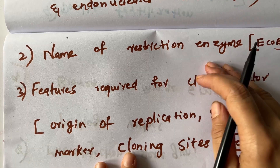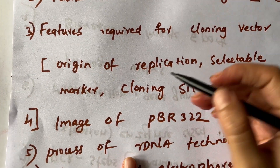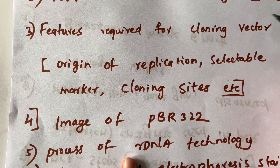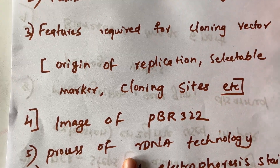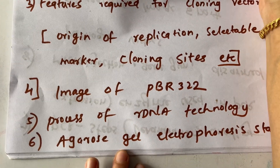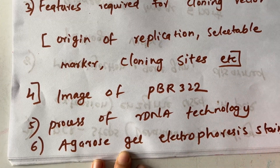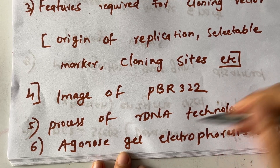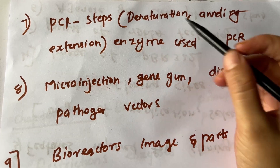Features required for a cloning vector: origin of replication, selectable marker, and cloning sites. These topics are covered under Cloning Vectors. Then, image of pBR322 and the process of rDNA technology. Then, agarose gel electrophoresis — this is a topic we will cover in this chapter.